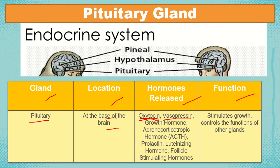Next, we have vasopressin, also known as the anti-diuretic hormone. Vasopressin prevents excessive urine production. It stimulates water reabsorption by the kidney, located in the kidney. So it is the one that regulates whether the kidney is still producing urine or not.